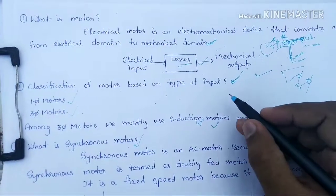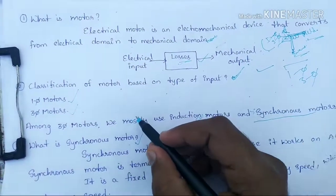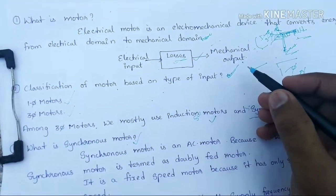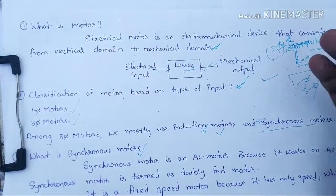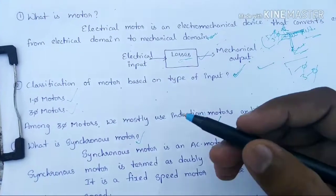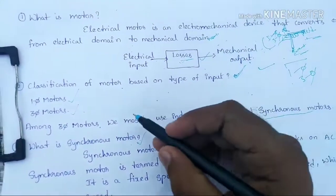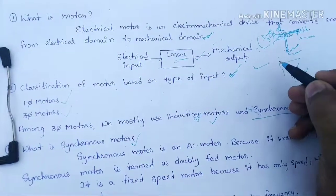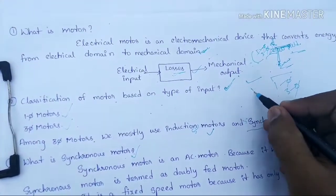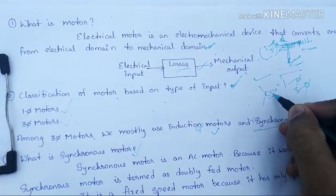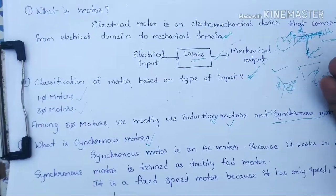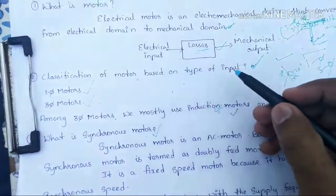The first type is single-phase motor — it takes single-phase input. The second type is three-phase motor — it takes three-phase input. The main difference is in the winding connections: a single-phase motor has one winding, while three-phase motors have three windings for the three phases — red, yellow, and blue — distributed 120 degrees apart.